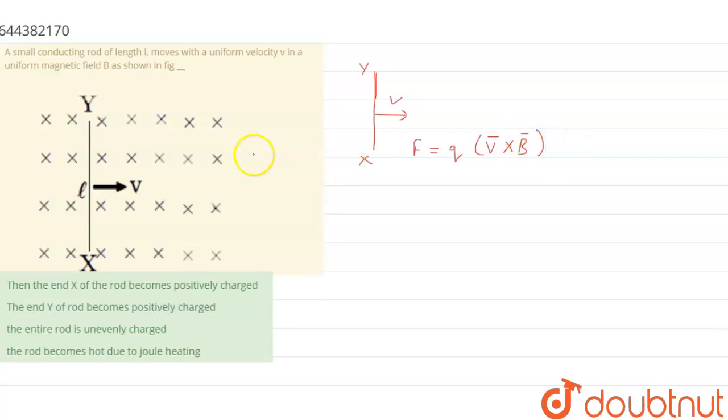Now we know that positive charge will move in the upward direction and negative charge will move in the downward direction, and we can say that at y there will be positive charges and at x there will be negative charges.